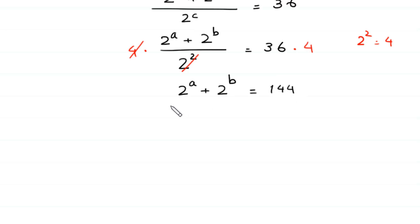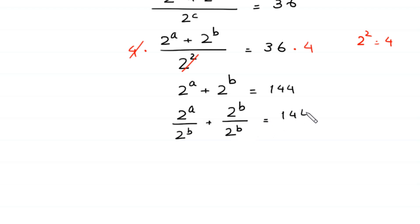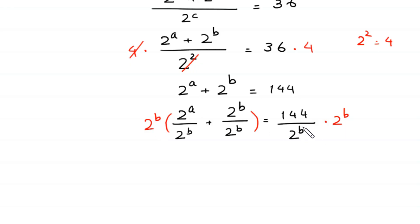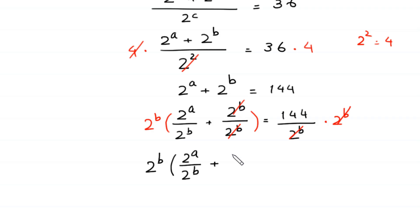Now, from the equation 2^a plus 2^b equals 144, we divide both sides by 2 to the power b. This gives 2^a / 2^b plus 2^b / 2^b equals 144 / 2^b. Multiplying both sides by 2^b, the 2^b terms cancel, and we are left with 2^b times (2^a / 2^b plus 1) equals 144.